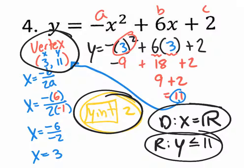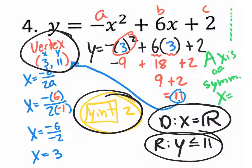We could even take it further and state the axis of symmetry. If I were graphing it, all I have to do is draw a dotted line right through the vertex. The equation of the axis of symmetry is simply x equals the x value of the vertex, which is 3. So x equals 3. We've stated all this information about a parabola we haven't even seen — just by knowing how to find the vertex, y-intercept, domain, range, and axis of symmetry.